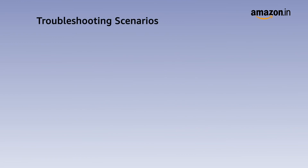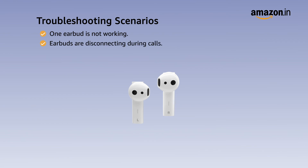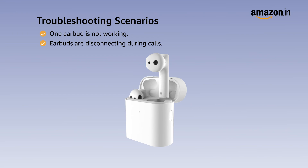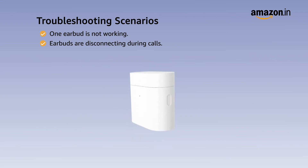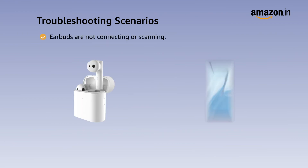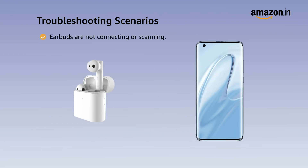Troubleshooting: One earbud is not working or earbuds are disconnecting during a call. Place the earphones in the charging case, then press and hold the charging case's function button for at least 10 seconds. When the indicator light stays lit, release the button. The earphones will restart and enter into pairing mode.